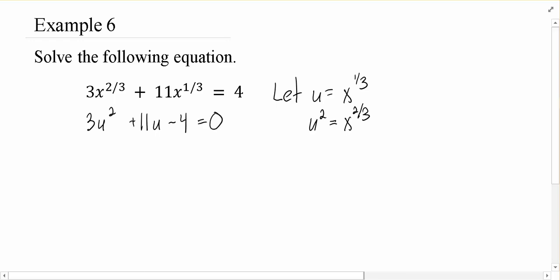And now we have an honest-to-goodness quadratic. Now we can go ahead and factor this. So this factors as 3u minus 1, u plus 4 equals 0.